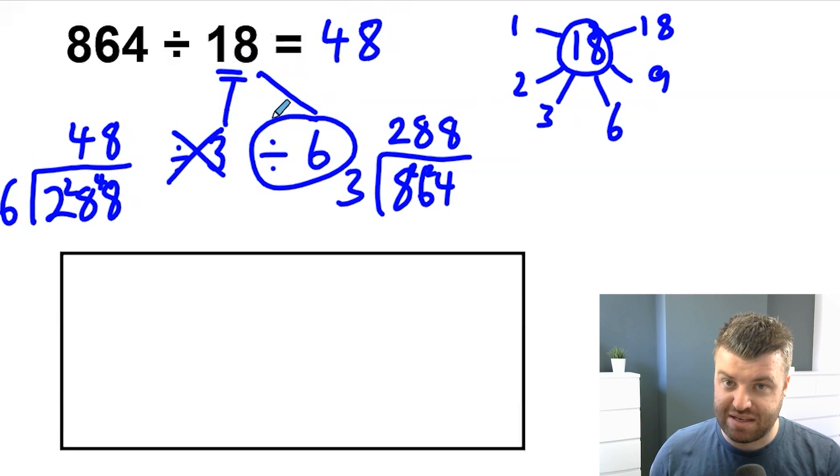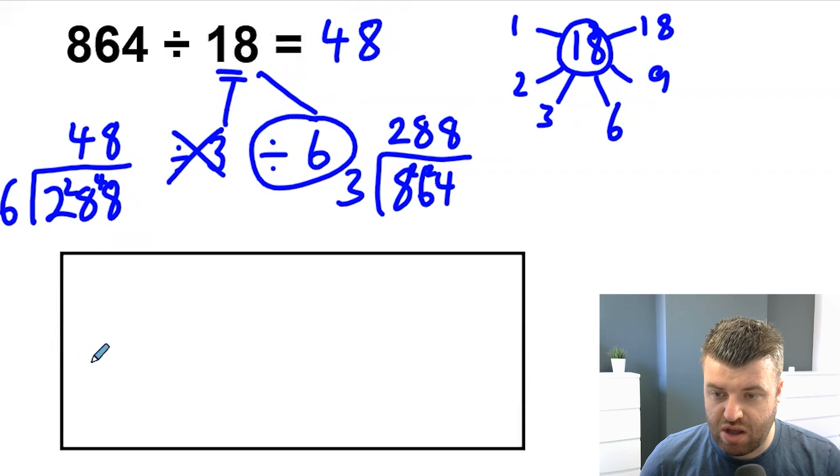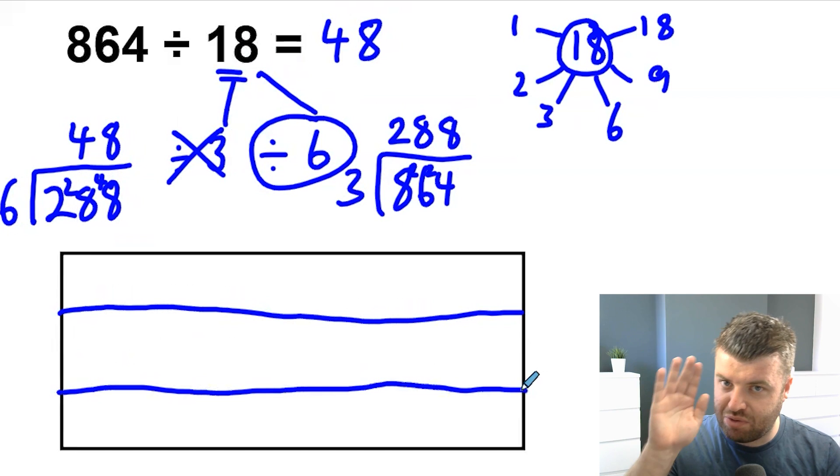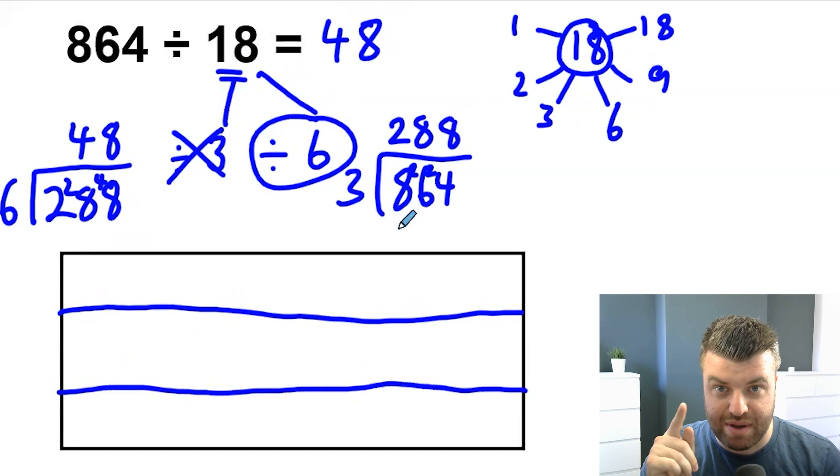So dividing by 18 is the same as we said, divided by 3 and divided by 6. Well, I'm going to split my hole here into 3. I'm going to go horizontally. So I've split that hole into 3 parts. Not quite equal because my lines aren't straight, but you can see 3 parts there.